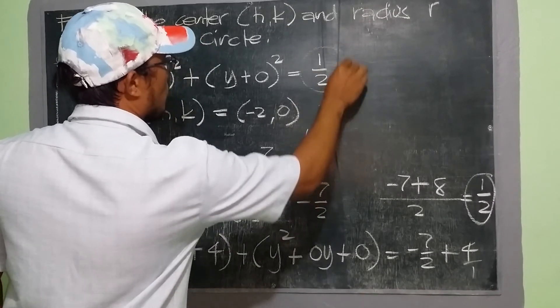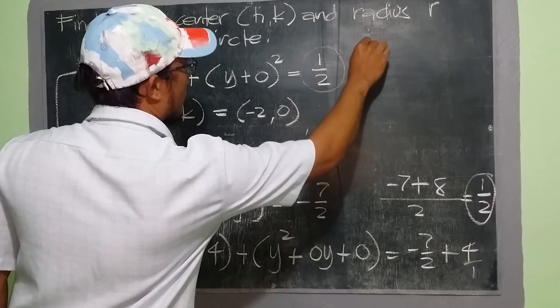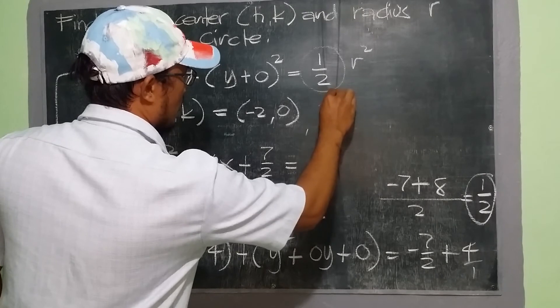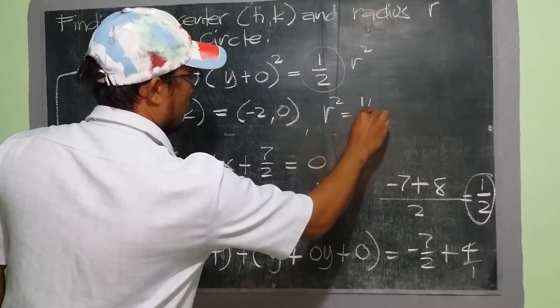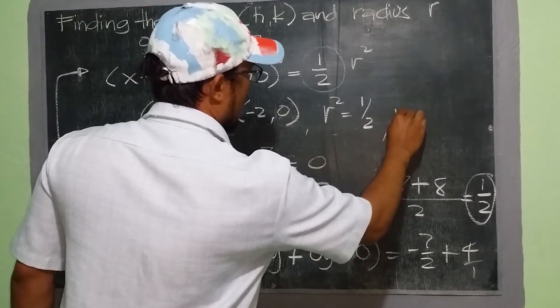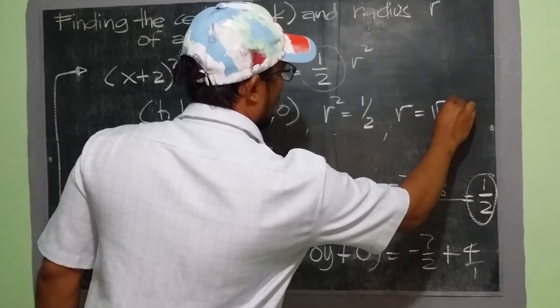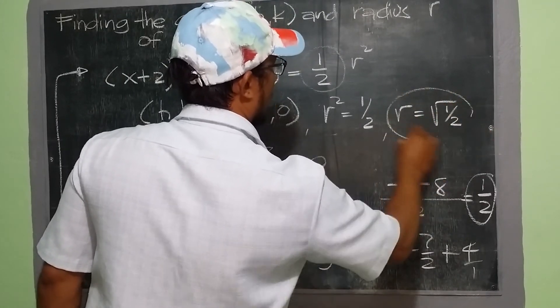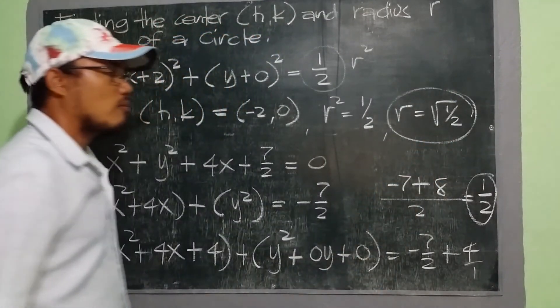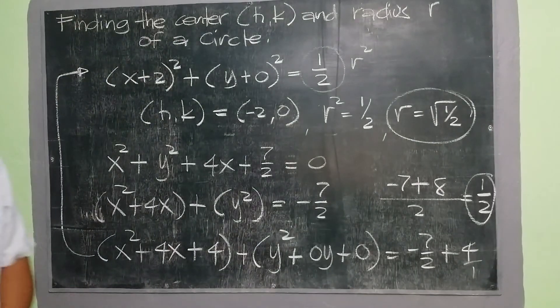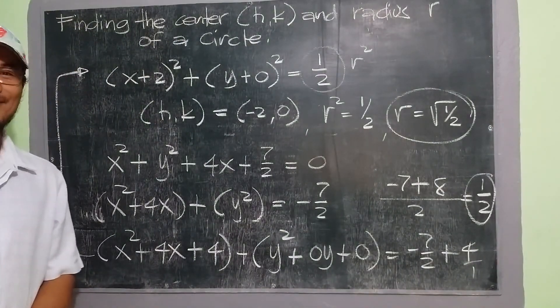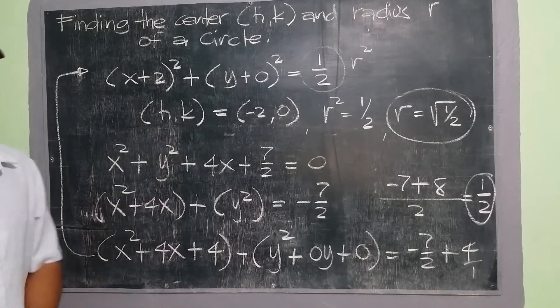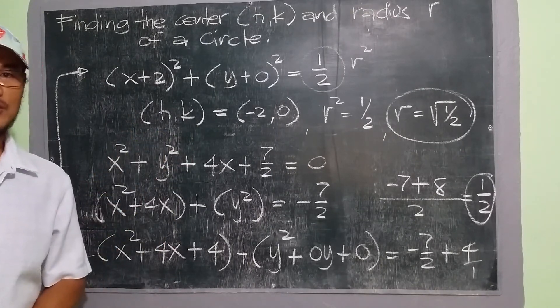Since remember that 1 half here is our r squared, so we put r squared is equal to 1 half. Or simply saying that r is the square root of 1 half. Our radius is the square root of 1 half. That's all. I hope you learned something from today's video. And once again, thank you for watching.